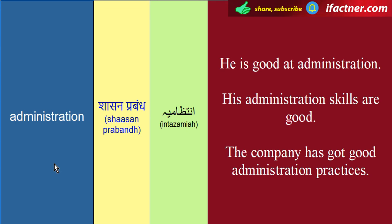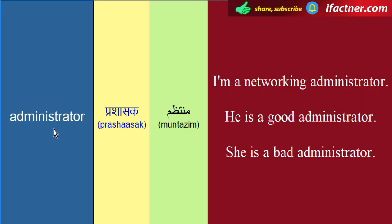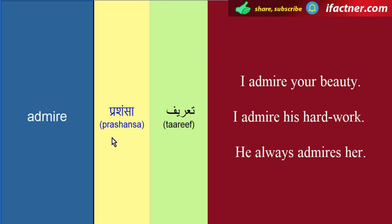Dostohun, jaldi se repeat ker letay hain. Administration ka meaning hota hai shasan prabhand, yaani ke intizaamiaan. Teen sentences: 'He is good at administration', 'His administration skills are good', aur 'The company has got good administration practices'. Administrator ka meaning hai prashasak, muntazim. Teen sentences: 'I am a network administrator', 'He is a good administrator', aur 'She is a bad administrator'. Admire ka meaning hai parashansa, yaani ke tarif kerna. Teen sentences: 'I admire your beauty', 'I admire his hard work', aur 'He always admires her'.